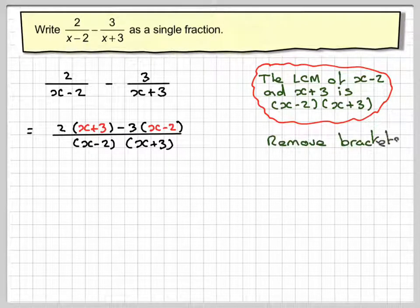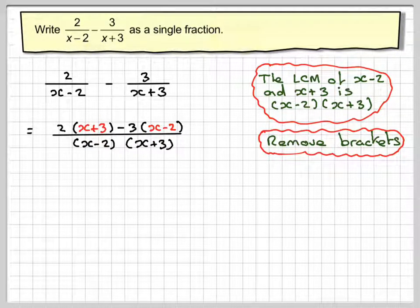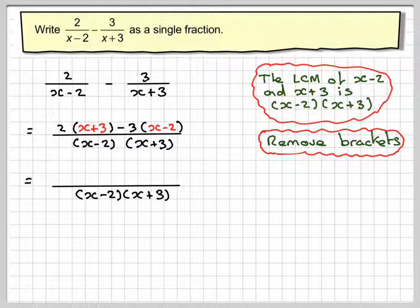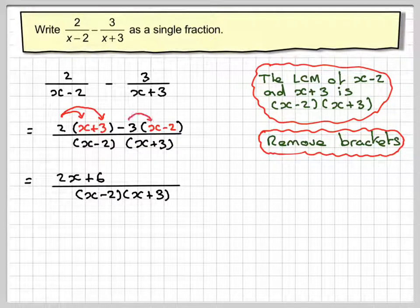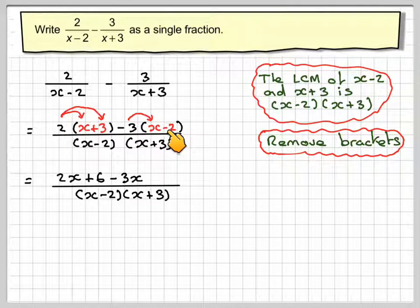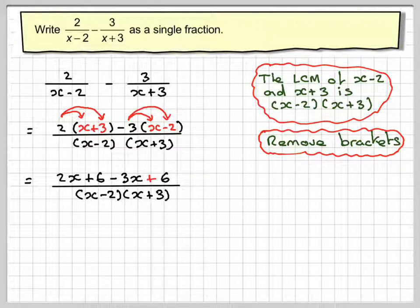So removing the brackets here in the numerator, we're going to have 2 times x, which is 2x, 2 times 3, which is 6, minus 3 times x, which is minus 3x, and then minus 3 times minus 2 is plus 6.